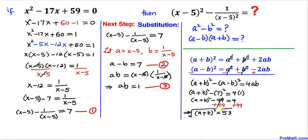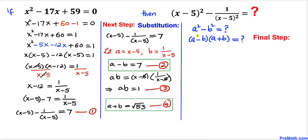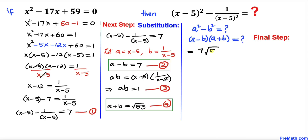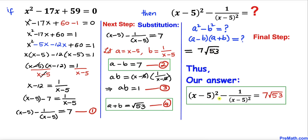Taking the square root on both sides, a plus b equals the square root of 53. Call this equation 4. Our a minus b value is 7, and a plus b from equation 4 is square root of 53. So our final value turns out to be 7 times the square root of 53. That is the value of (x minus 5) squared minus 1 over (x minus 5) squared.